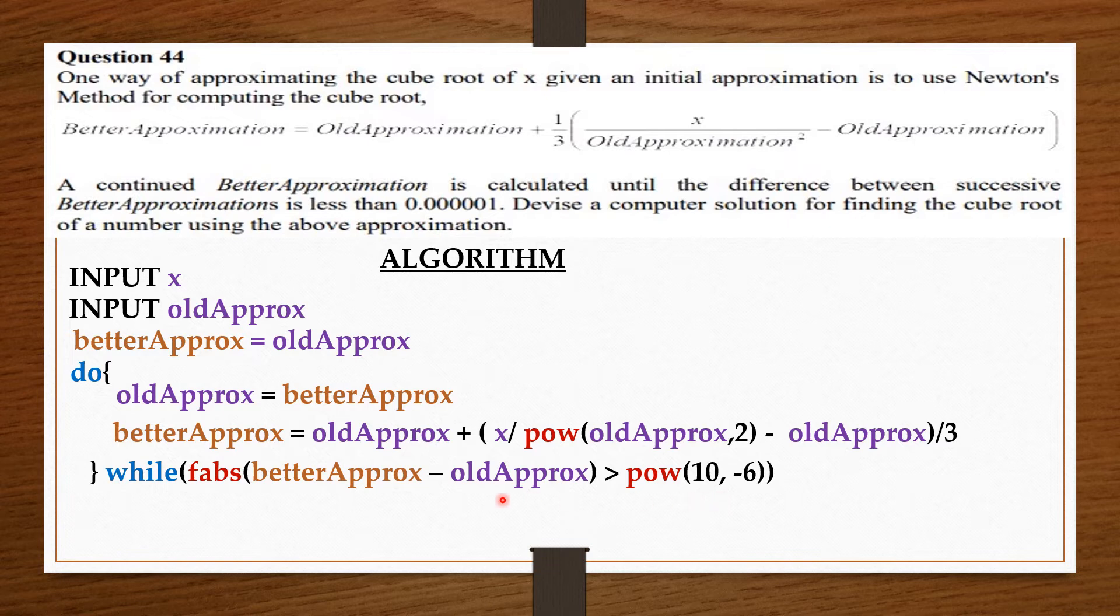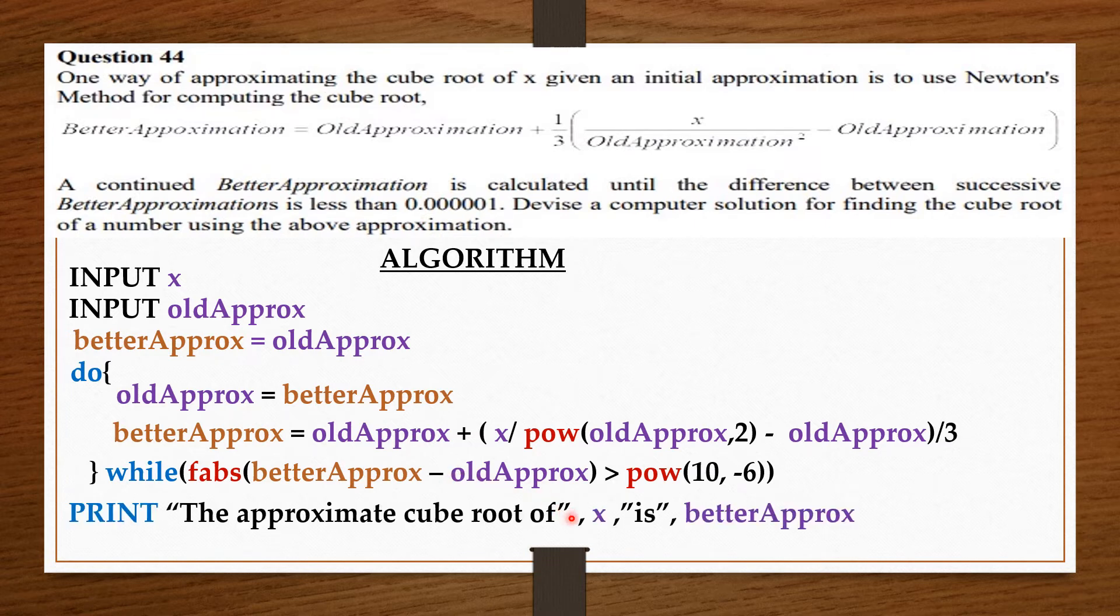Then it should retain the value of betterApprox to print: the approximate cube root of x is betterApprox. So the value of x entered, the betterApprox we have computed, is Newton's method.